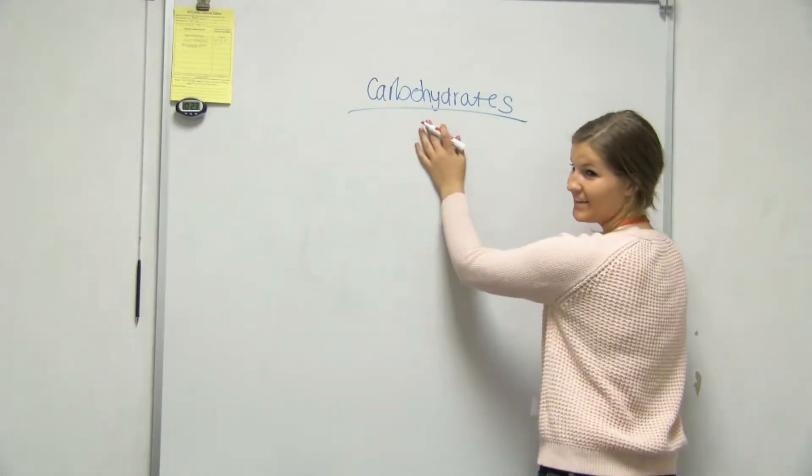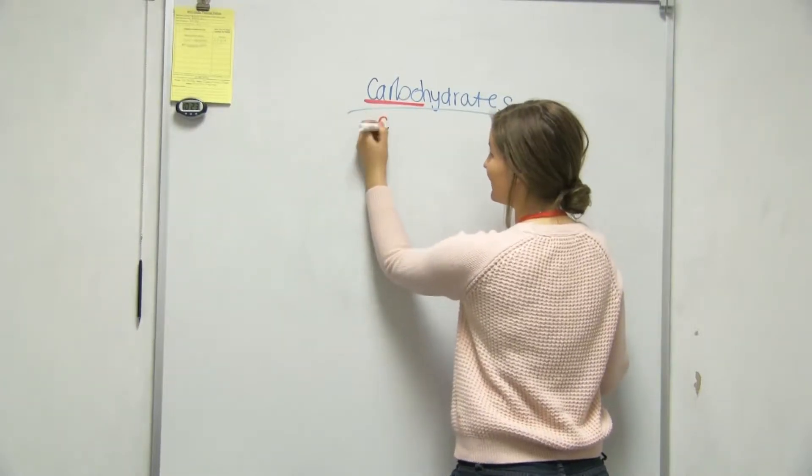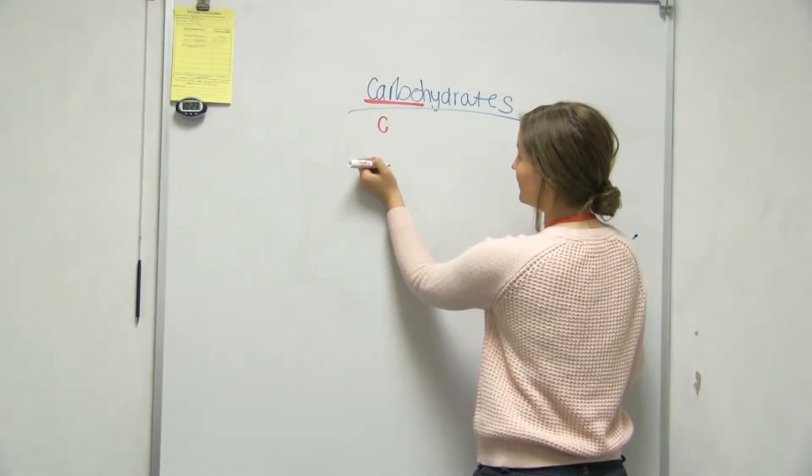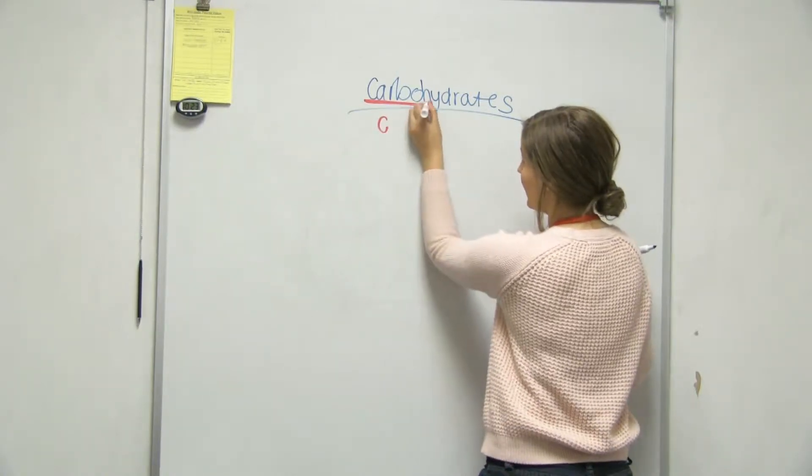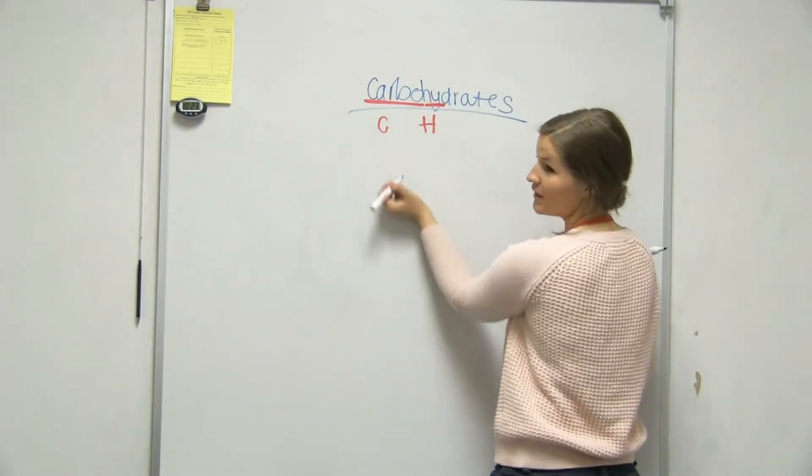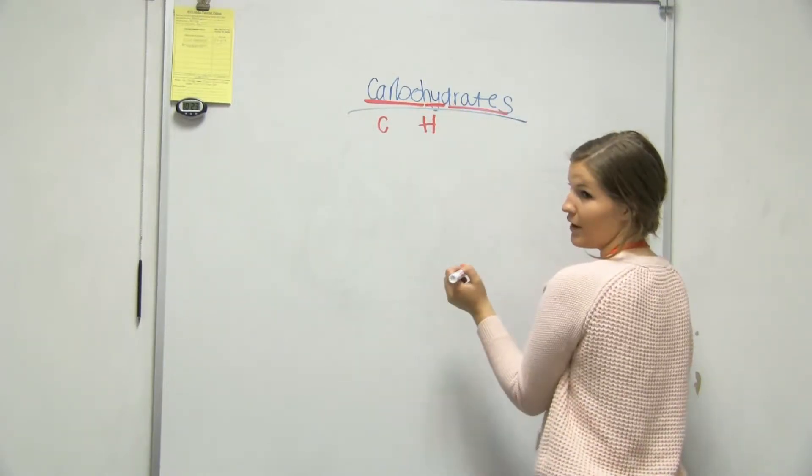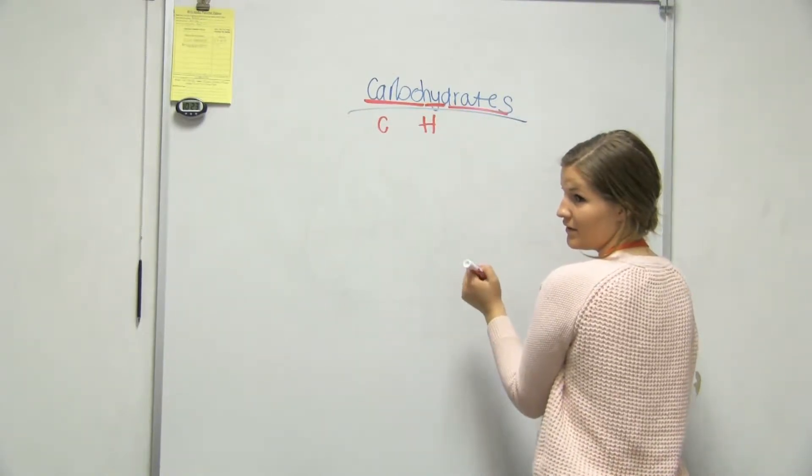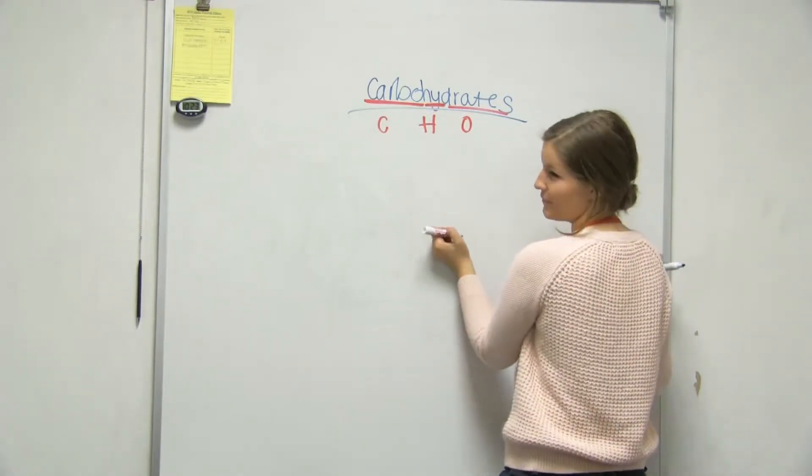So it's going to be in the name, which is actually really helpful. So we have carbo. Oh yeah, they said it was the same ratio as water, so it was H2O, right? And then hydro, so that's where we get the hydrogen, and then yeah, carbo-high, and then that's just oxygen. Okay. Does that make sense? Yeah, yeah.